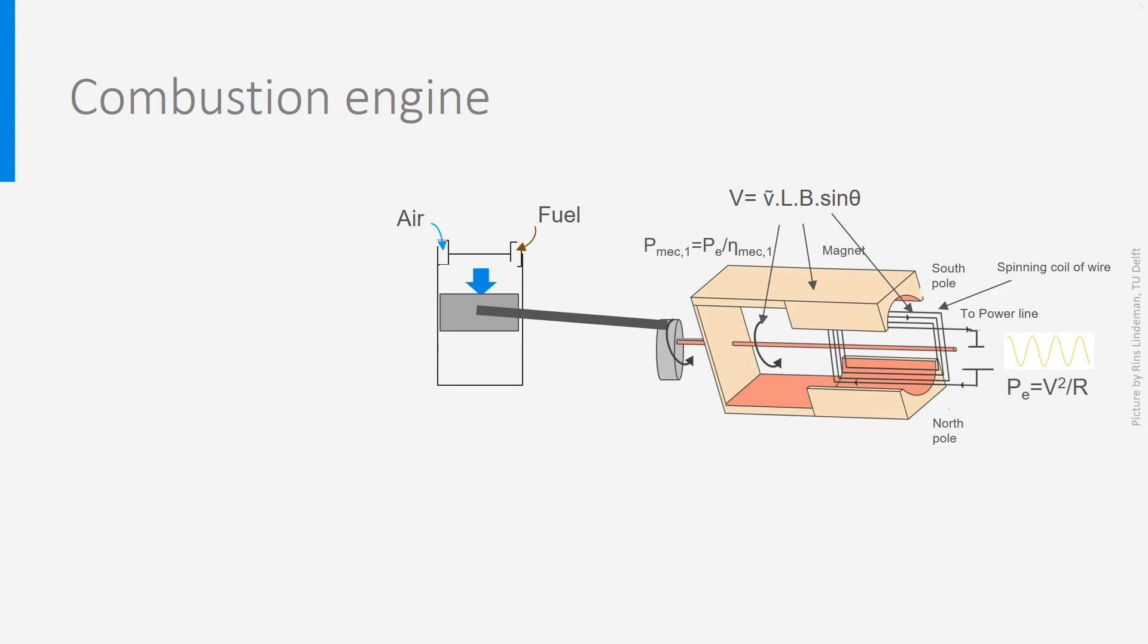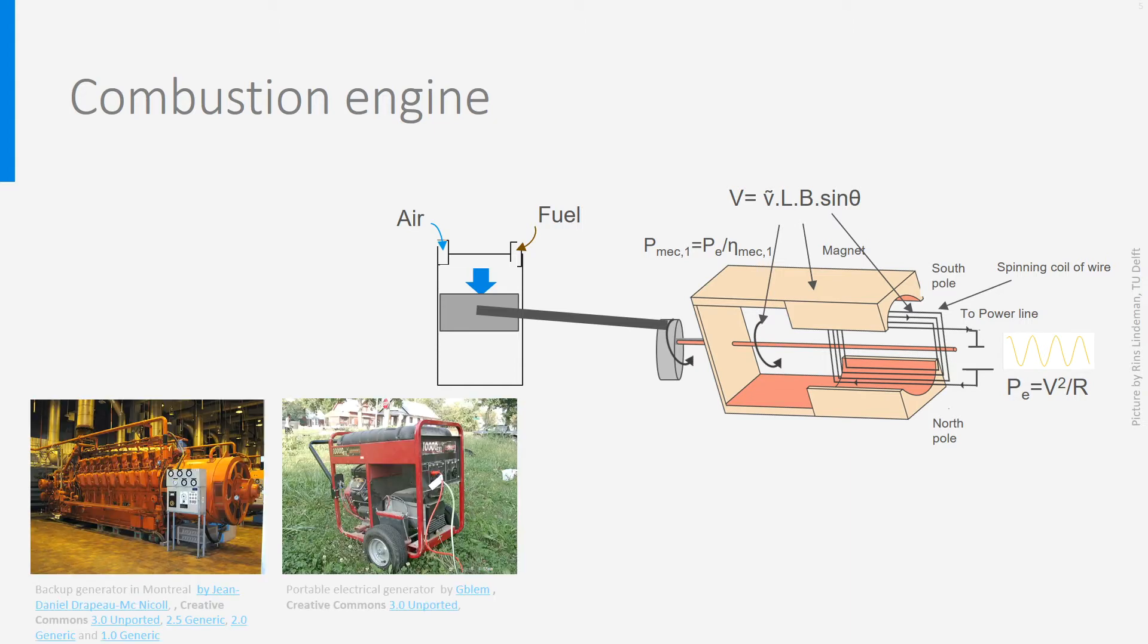Let's start with the first system, the combustion engine. In a combustion engine, fossil fuel or biogas or even hydrogen is burned directly in the engine, making a piston move. The piston is connected to the rotor by a rod, and as the piston moves, it rotates the rotor. This is exactly the same principle as the gasoline or diesel motor of a car. You see, left an example used as backup generator for a factory and right a portable engine.